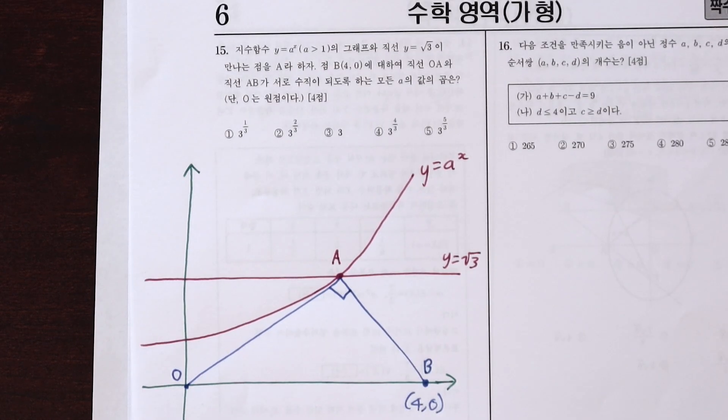And we're asked what is the product of all the values of the little a such that the straight lines ab and oa are perpendicular to each other. Now if you ask me that sounds pretty tricky.